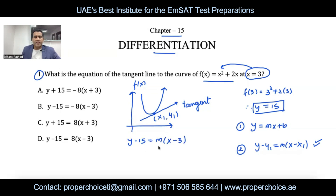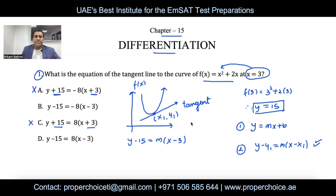With this substitution, I can eliminate option A because it shows y + 15 and x + 3, which is wrong. I can also eliminate option C for the same reason. The answer is either B or D. Now, if a line touches the function, the slope of that line equals the first derivative of the function at x = 3. So dy/dx equals the slope m.